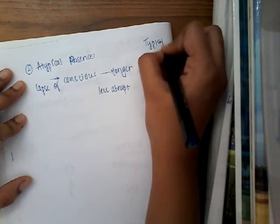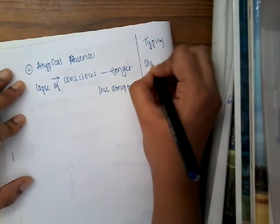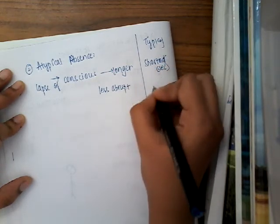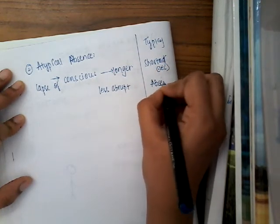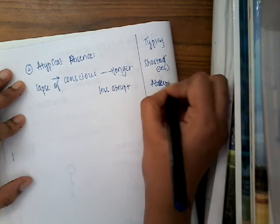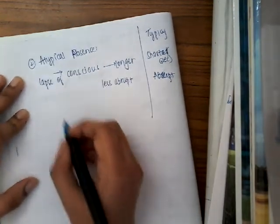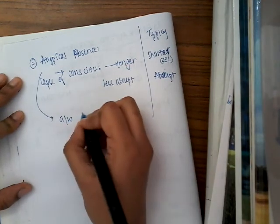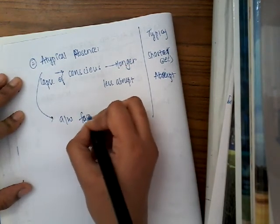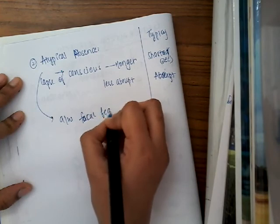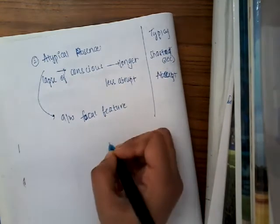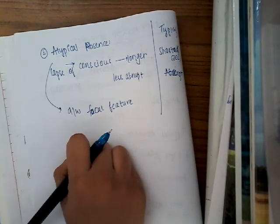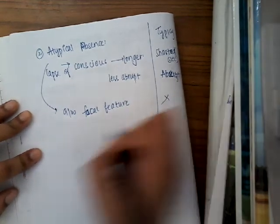In typical, what is there? It is for shorter period, very shorter period, some seconds. And it is abrupt in onset. Okay. And then, if you see this absence seizure, it is sometimes associated with focal features. Okay. So that it is not difficult for us to diagnose it. Okay. Here, there is no focal seizures.